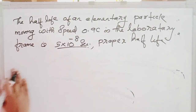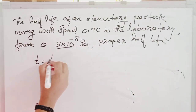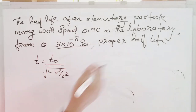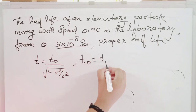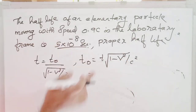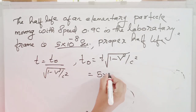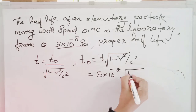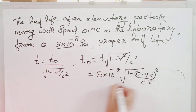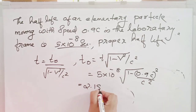We know the time dilation equation: T = T₀ divided by √(1 − v²/c²). We need to find the proper half-life T₀ = T × √(1 − v²/c²). With T = 5 × 10⁻⁸ seconds and v = 0.9c, T₀ equals 5 × 10⁻⁸ × √(1 − (0.9c)²/c²), which gives 2.19 × 10⁻⁸ seconds.